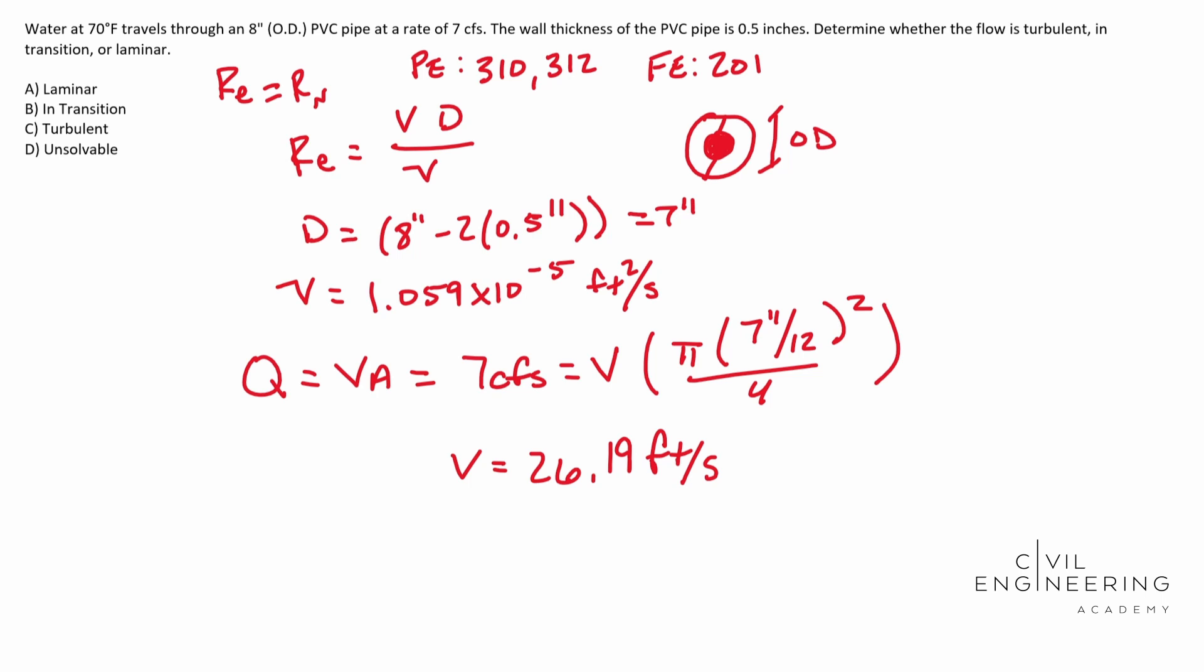And so now we have all our unknowns for our Reynolds number. So RE is equal to 26.919 feet per second. And we're going to multiply that by our inside diameter which is 7 inches.